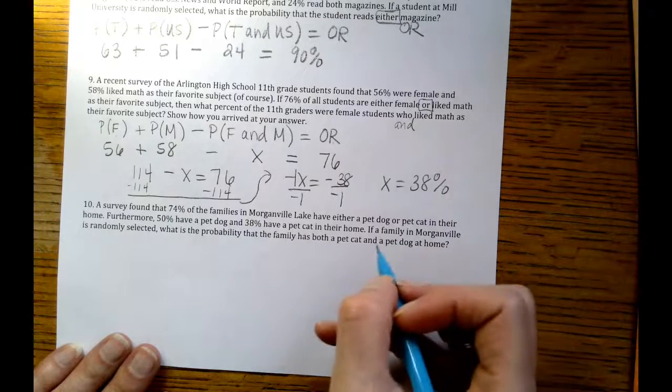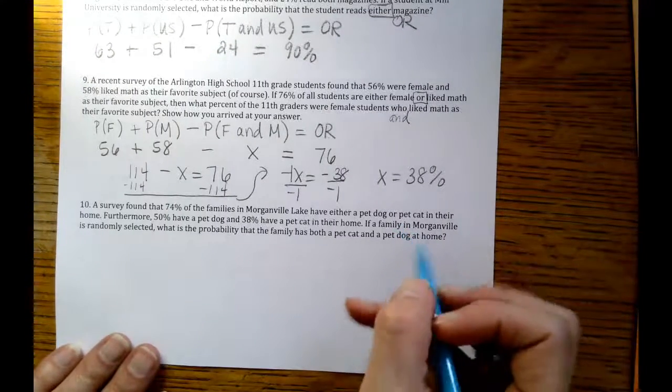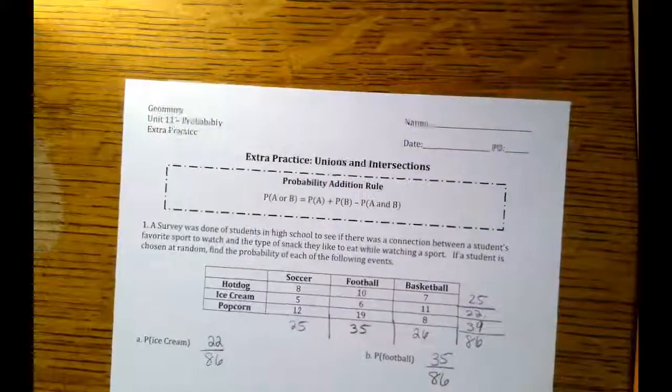First of all, again, I read right over it. But 74% of the families in Morganville Lake have either a pet dog or a pet cat. So we've got this OR idea, meaning one last time we're going to be using the probability addition rule.